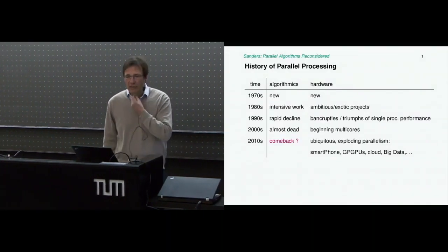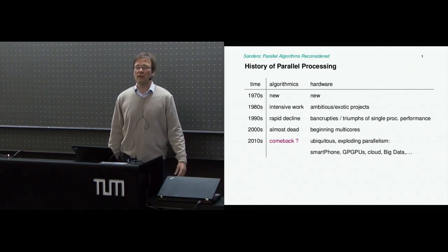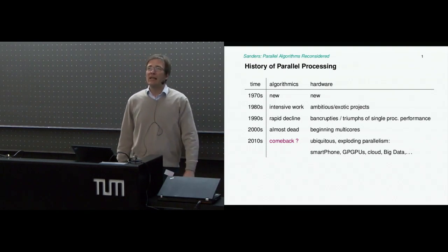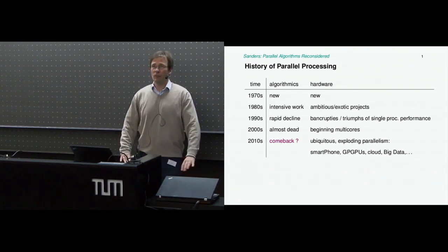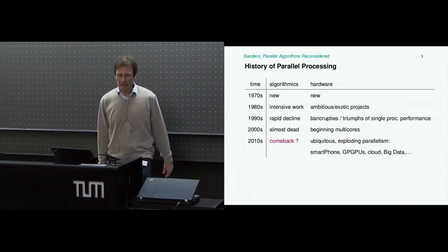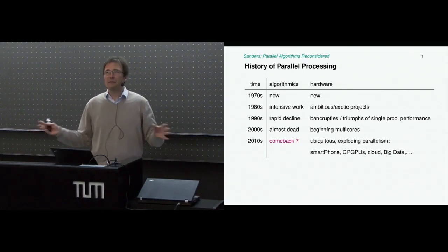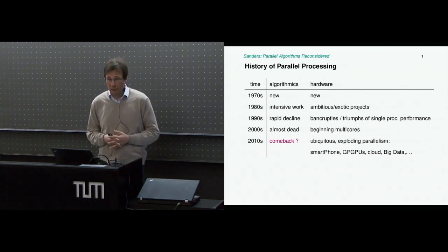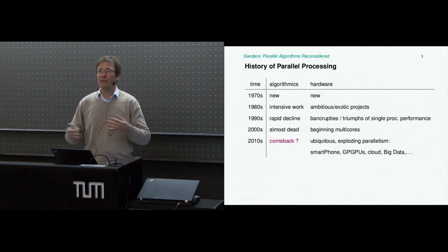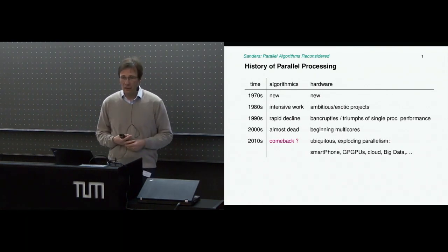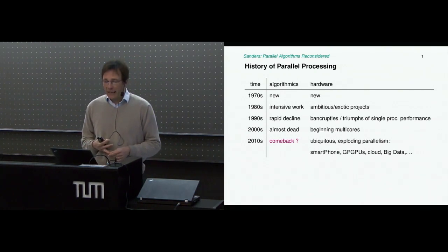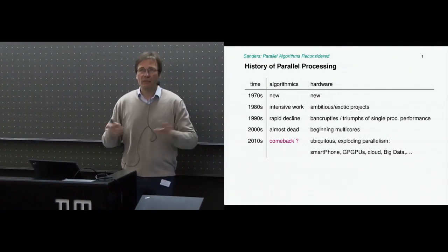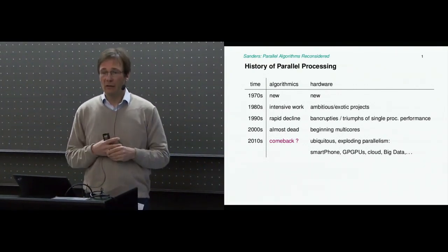Let me give you a very short simplified history of parallel processing. Even the work done during the Second World War was parallel in some sense. But until the 1970s, all of computer science, and in particular parallel computing, was very new—there were some pioneering things, but not much work done yet. Then in the 1980s, it became something of a hot topic in the theory community. Parallel algorithms was one of the biggest topics of all.